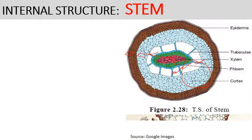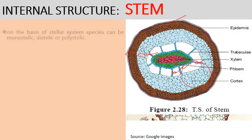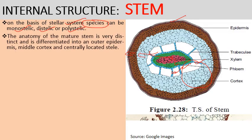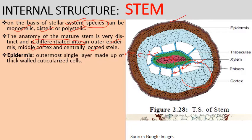The anatomy of the mature stem is differentiated into outer epidermis, middle cortex, and centrally located stele. The epidermis is the outermost single layer made up of thick-walled, cuticularized cells, devoid of stomata and hairs.